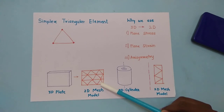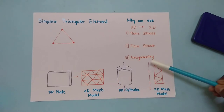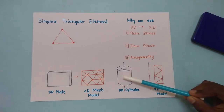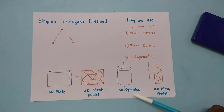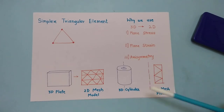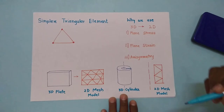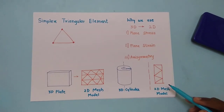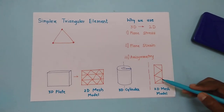In axisymmetry, the body is symmetric about the z-axis. For a 3D cylinder, we consider only the cross-section along the edge. This cross-section is converted from 3D to a 2D mesh, the analysis is solved, and then the results can be rotated to get the full axisymmetric solution.